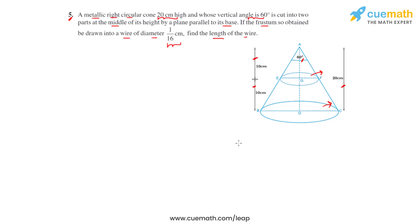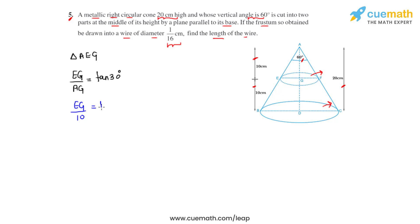The two sections have equal heights of 10 centimeters each. We need to find the radius of the upper and lower circular ends of the frustum. Focusing on triangle AEG, we take the ratio of sides EG and AG, which equals tan 30°, giving EG/AG = 1/√3. With AG = 10, we get EG = 10/√3. Rationalizing, r1 = 10√3/3 centimeters — the radius of the upper circular end of the frustum.